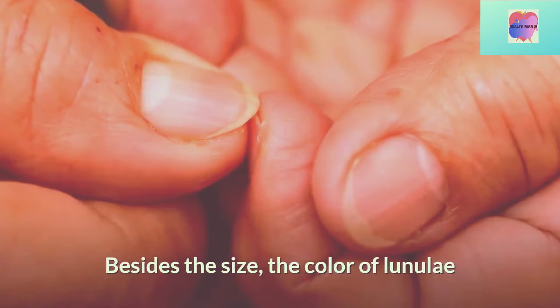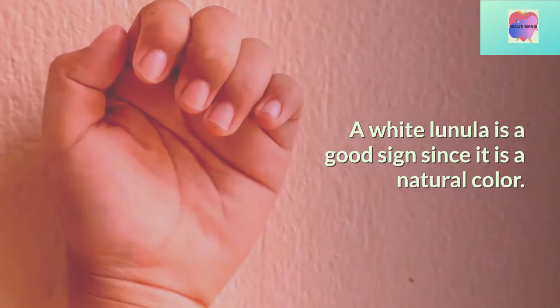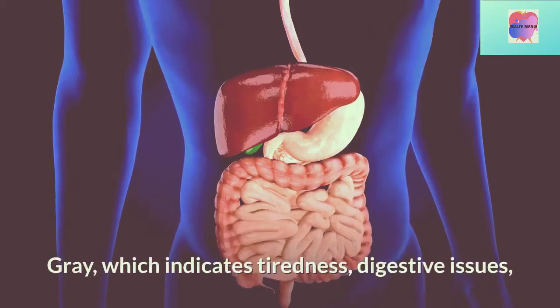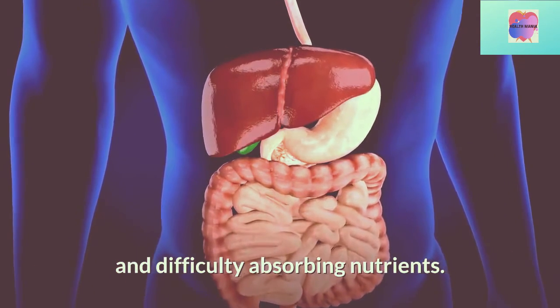Besides the size, the color of lunula can also be altered. A white lunula is a good sign, since it is a natural color. But there are other colors, such as gray, which indicates tiredness, digestive issues, and difficulty absorbing nutrients.